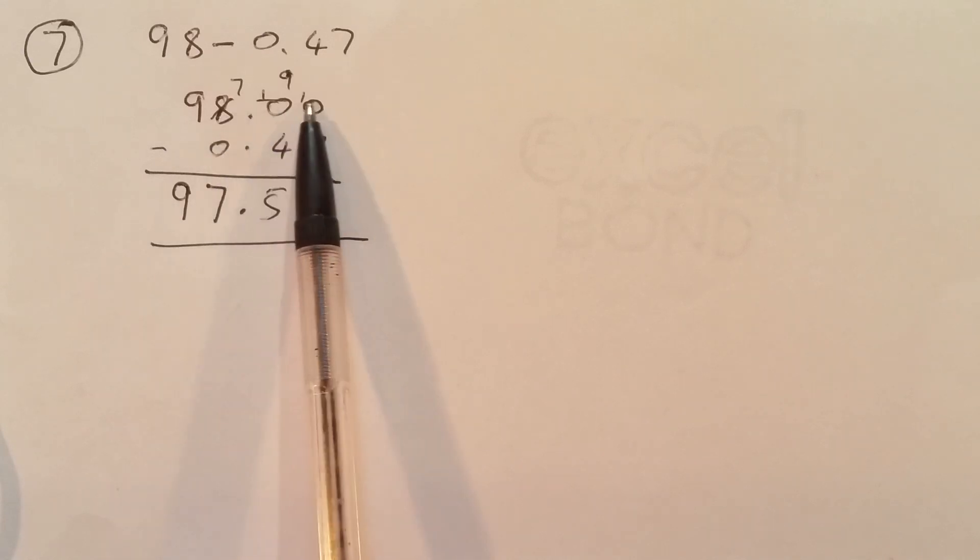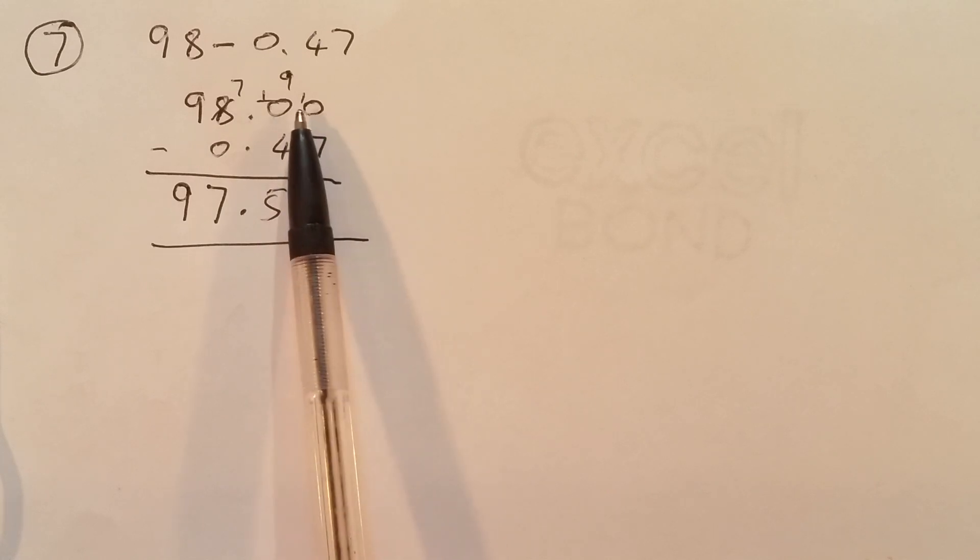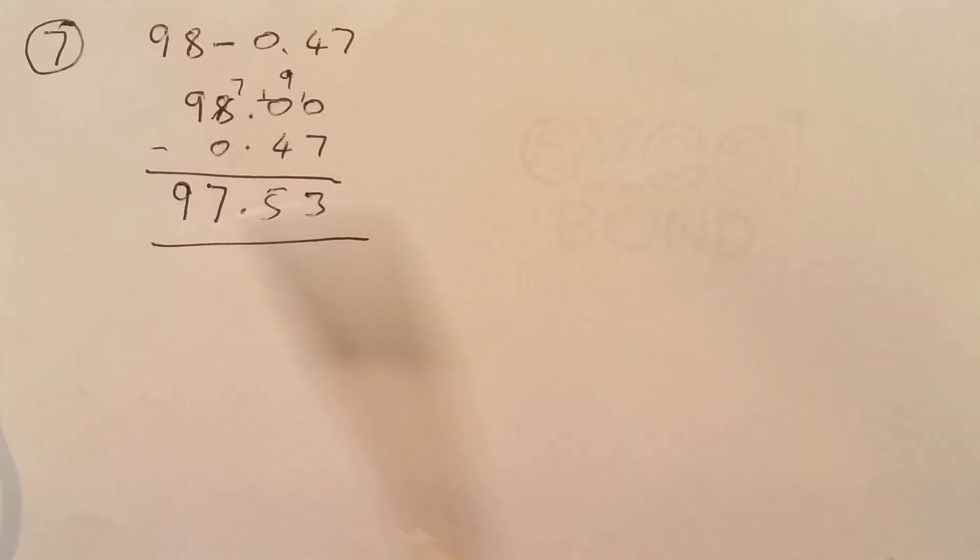So, make sure you do that carefully. Last number, last zero will always become 10. And after that, all the zeros will become 9. We borrow it from the last number. And exactly the same thing. This should be properly aligned. Hope you understood that. Let's move to the next one.